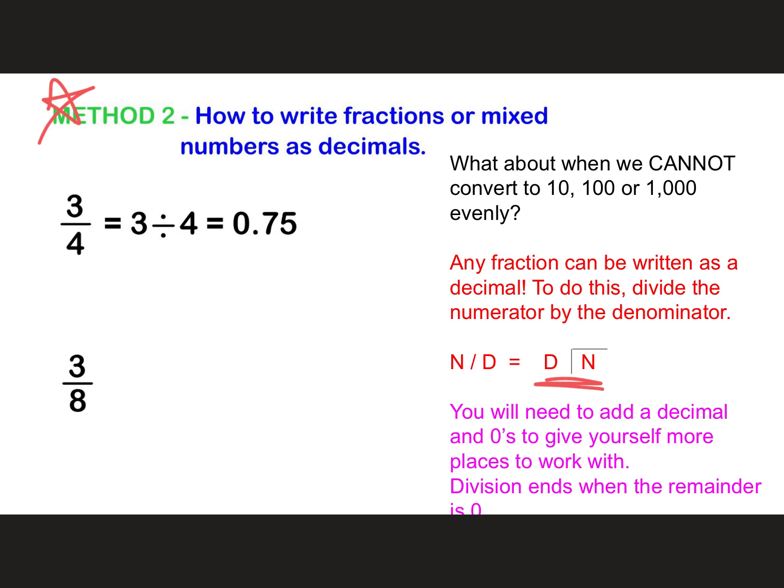So our example here, three-fourths. Again, you're taking numerator divided by the denominator. And if we were to set that up using our division bracket, the numerator goes on the inside, denominator goes on the outside. We'd have to add a decimal and some zeros here. Now we can also use our calculator by entering it as three divided by four, which would give us this decimal.